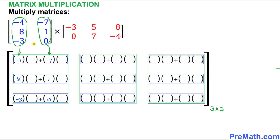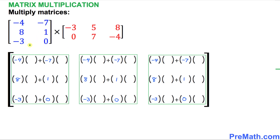We repeat this same process for all three columns. Here I have nicely filled out the blue numbers across all three columns as you can see. Now let's focus on the right hand side red matrix.